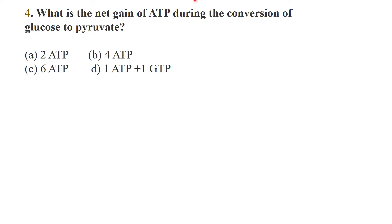Which is the net gain of ATP during conversion of glucose to pyruvate? This is the process of glycolysis, during which the glucose molecule is converted into pyruvate. The gross ATP and net ATP are two — the net ATP gain in glycolysis is 2 ATP.